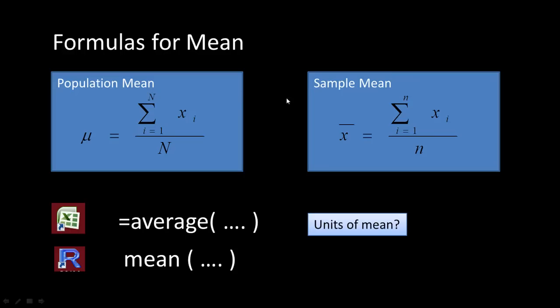If you do the same calculation with a sample — say a set of 1,000 selected households — you sum from 1 to 1,000 (the sample size, lowercase n), not the full population size N. You sum all sample values and divide by the sample size. The calculation is the same average, but the items are only members of the sample, not the entire population.